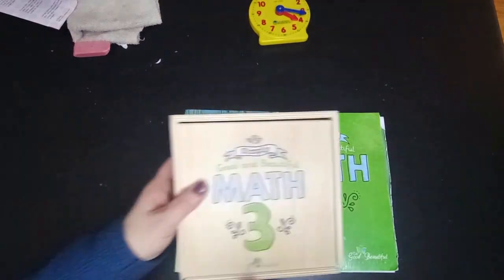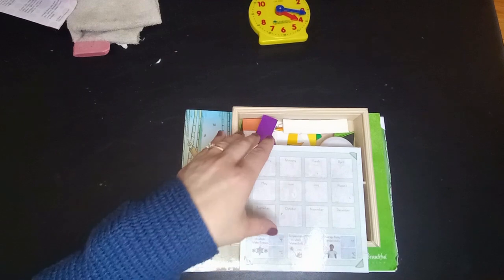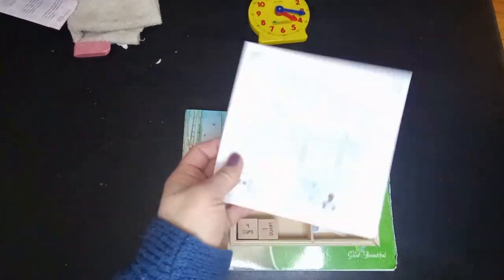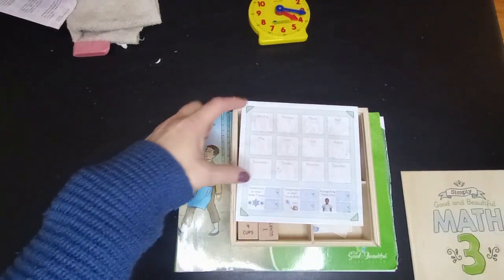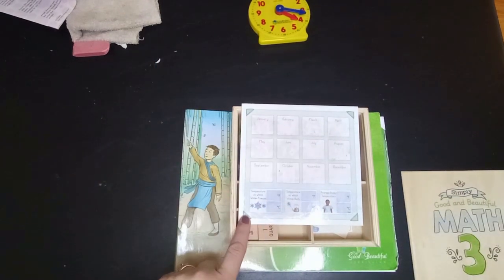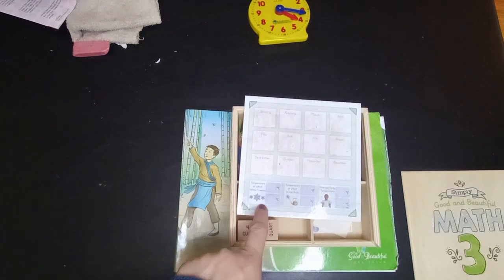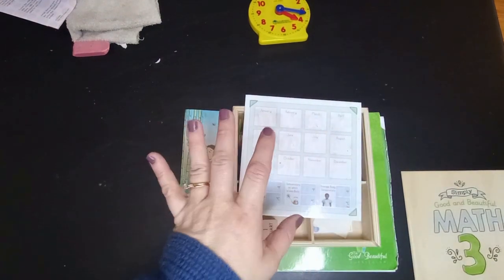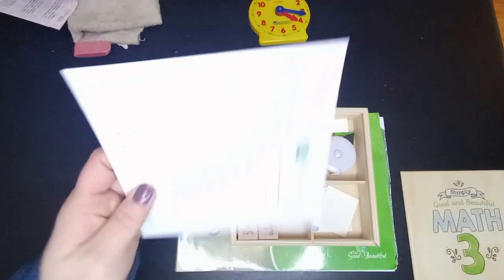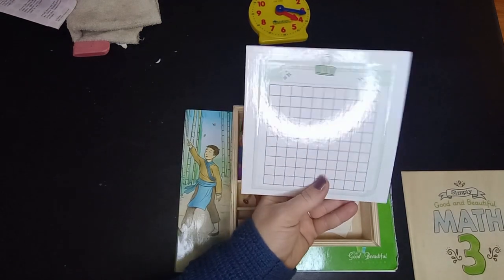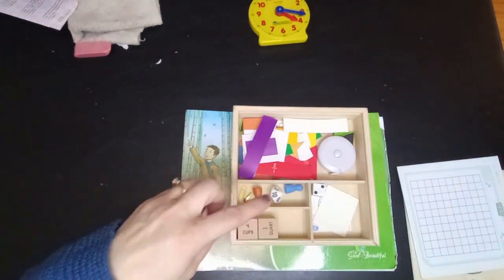It also comes with this math box, and inside the math box you have the calendar side, which they go through and write every once in a while how many days are in each month, then the temperature at which water freezes, water boils, and the average body temperature at both Fahrenheit and Celsius. It's just a great little way when it's brought up in the book to just practice those little facts. There is a graph on the other side, we have not used that yet this year, but we will. And then it also has a little measuring tape, so my kids think that's really fun.